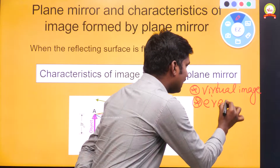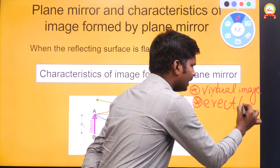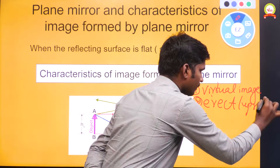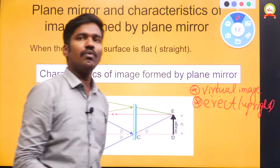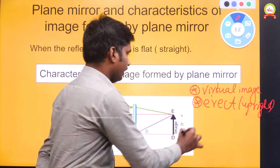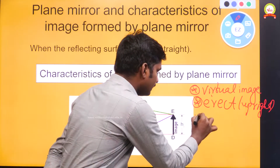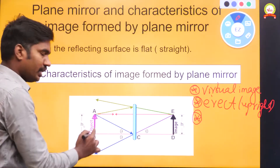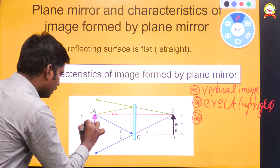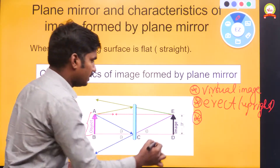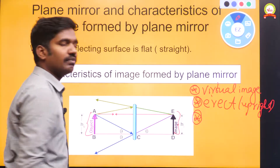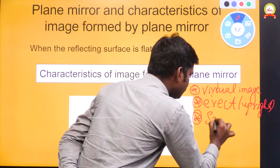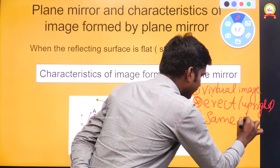The second characteristic is that the image will be erect — you can say it as upright. The image will be in the form of an upright image. The third characteristic is about the size: the size of the object is equal to the size of the image — the same size as the object.